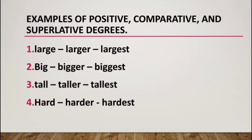Examples of positive, comparative, and superlative degree: Large, larger, largest. Big, bigger, biggest. Tall, taller, tallest. Hard, harder, hardest. These are the positive, comparative, and superlative degrees of comparison. Hope students you all understood what is adjective and what is degree of comparison. In degree of comparison we have learned three degrees: positive, comparative, and superlative. And in adjective we learned five kinds: quality, number and quantity, demonstrative, possessive, and interrogative. Thank you.